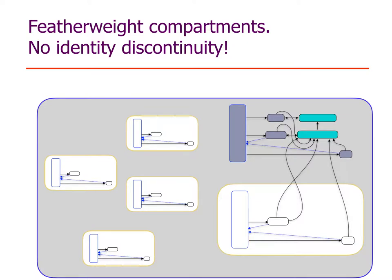The crucial thing is that these compartments are featherweight — they get everything else from the root realm that they were created within. Since compartments are technically also realms, we call the brand new set of primordials the kind of thing you get in the browser when you do a new same-origin iframe a 'root realm', and the kind of realm that inherits all of its primordials from a root realm we call a 'compartment', but they're both technically realms.